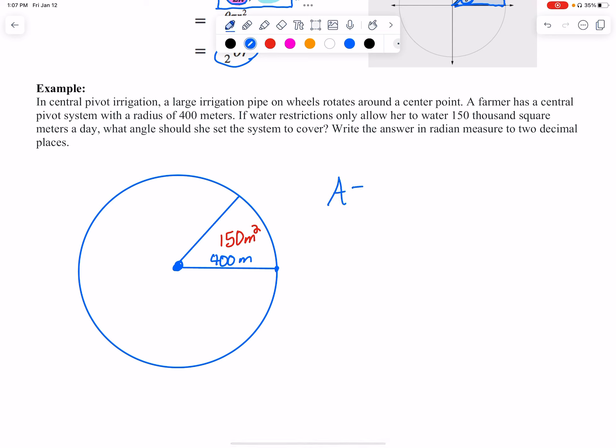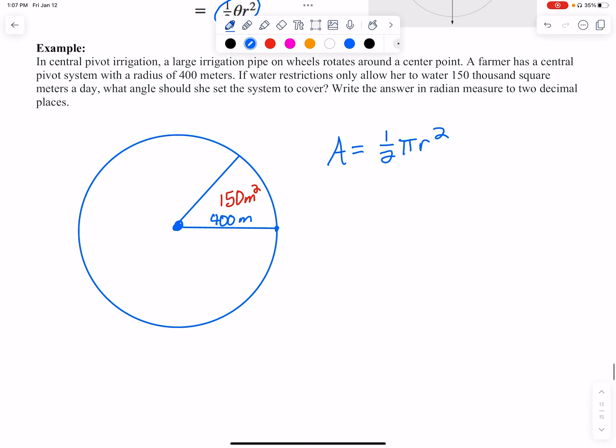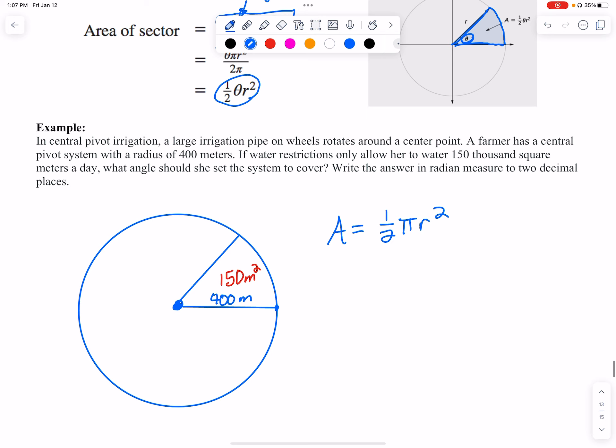We've got ½θr²—or sorry, θ—see, this is why I'm not great at memorizing it—θr². There we go. And they gave us everything except for theta in this case.